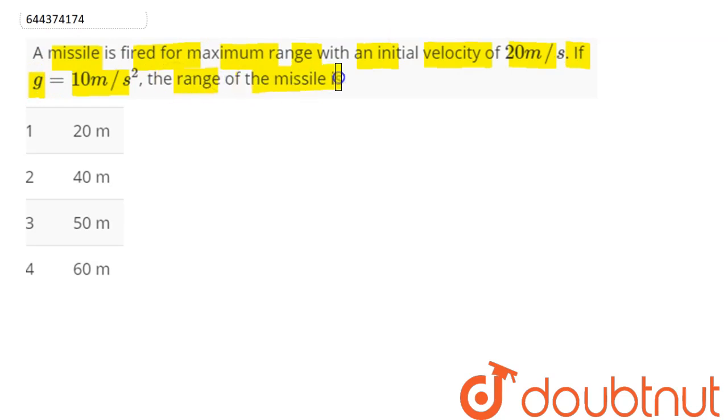As u squared sine 2θ divided by g. Now for range to be maximum, we can say here u and g are constant.